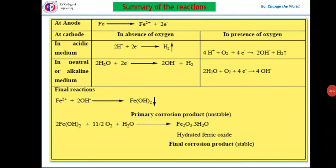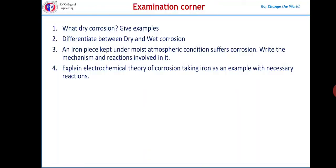These are the summary of the electrochemical theory reactions. At anode, metal undergoes oxidation. At cathode, these electrons are absorbed. Depending upon the medium, it may be acidic or neutral or alkaline medium. In general there are three possible ways in which reduction takes place. They are the cathodic reactions and the final reactions where actually first primary corrosion product is formed which is unstable. Immediately in presence of oxygen, in presence of water it gets converted to hydrated ferric oxide, that is our final corrosion product.